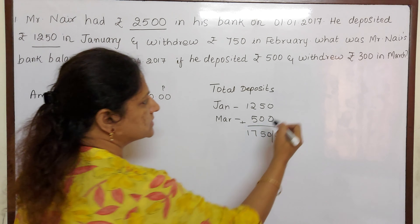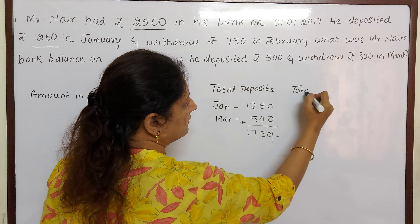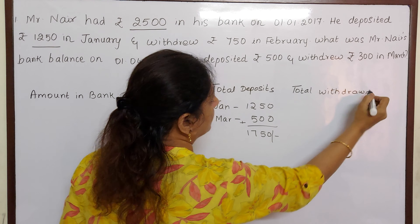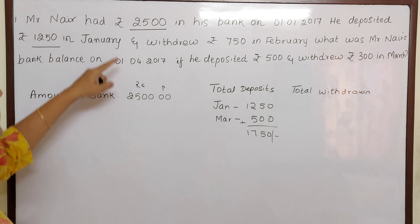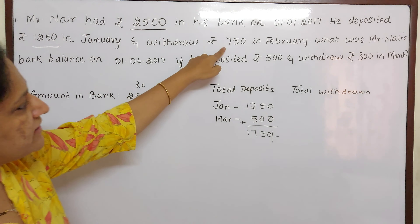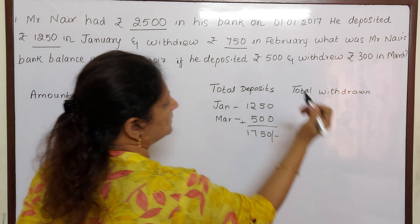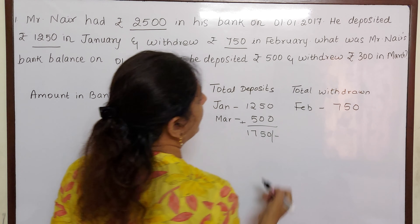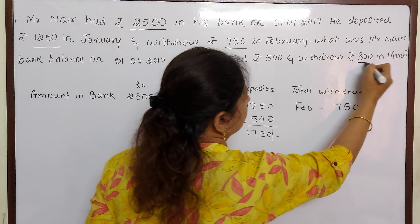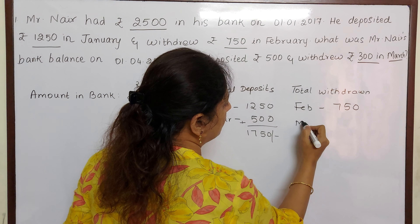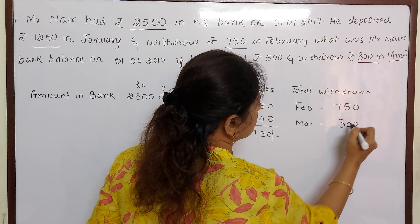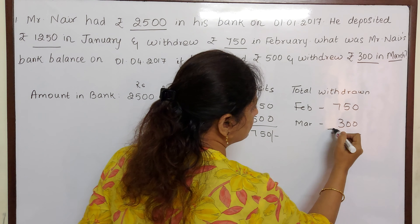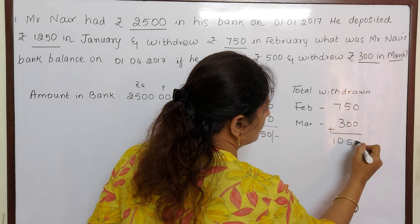Now let us see what is the total withdrawal — that means how much money he has withdrawn from the bank. In February he has withdrawn Rs. 750. And in March he has withdrawn Rs. 300. So in total he has withdrawn Rs. 1,050.